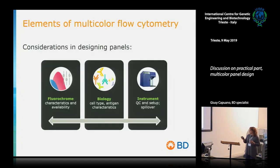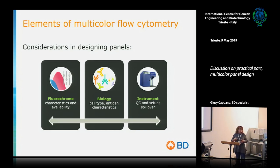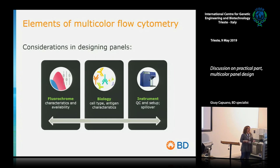Finally, we can consider three steps: reagent and fluorochrome selection; biology — the cell type, antigen characteristics; and obviously the instrument, including the compatibility of lasers, detectors, and so on.